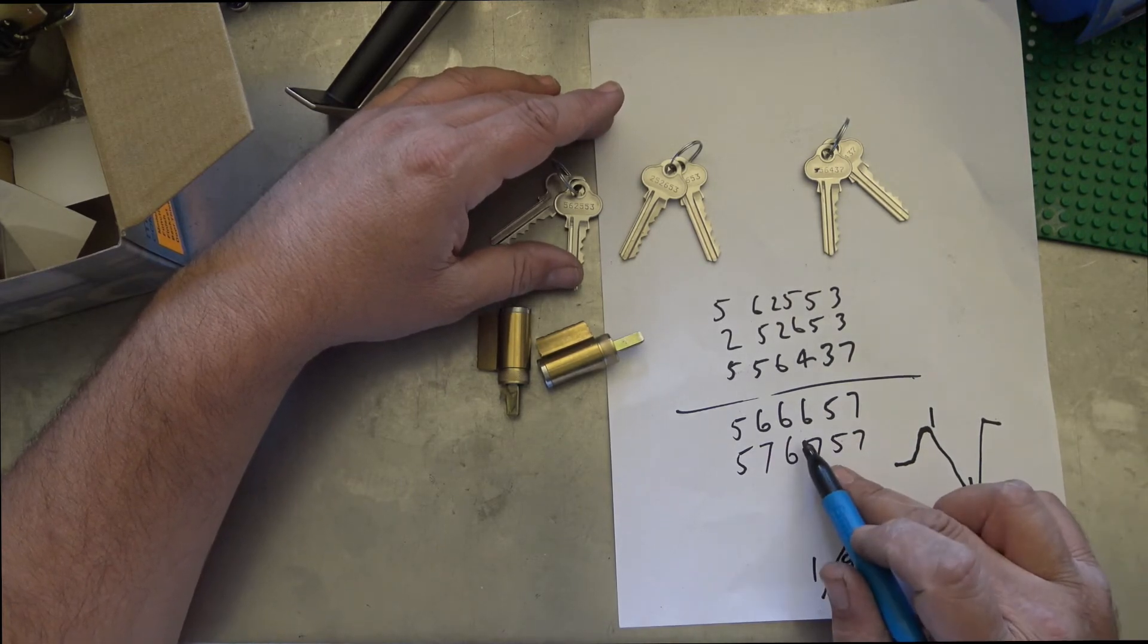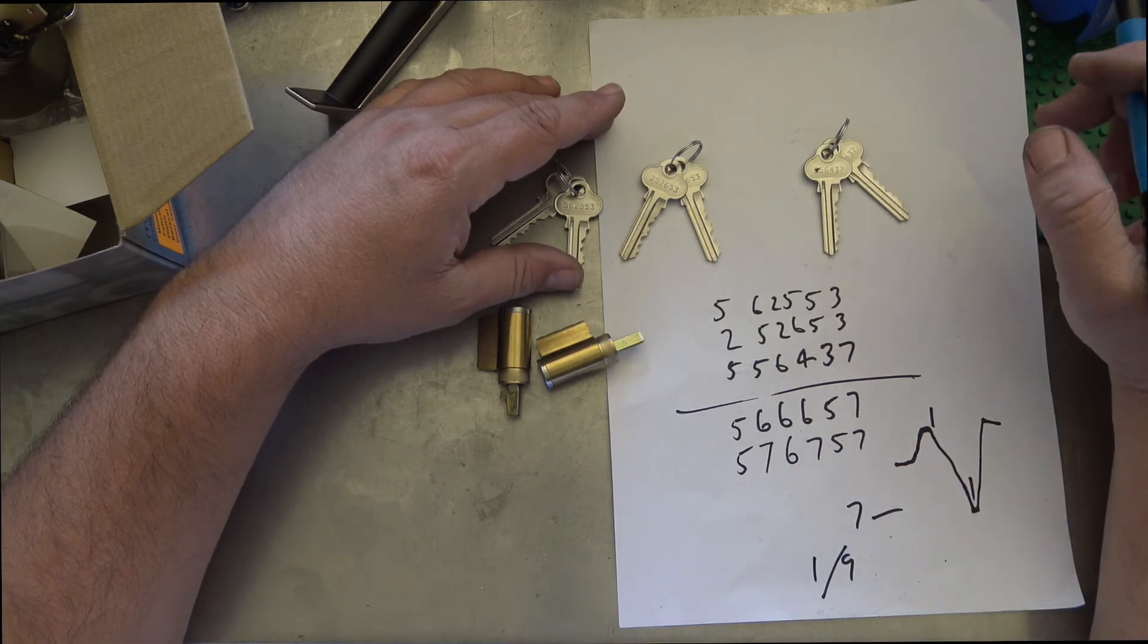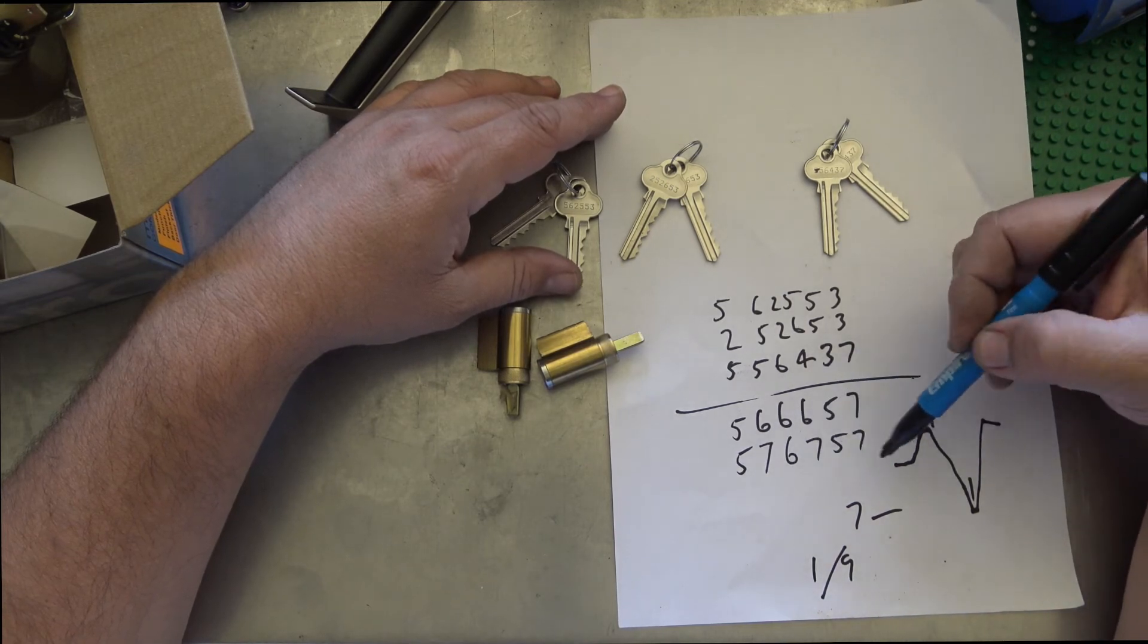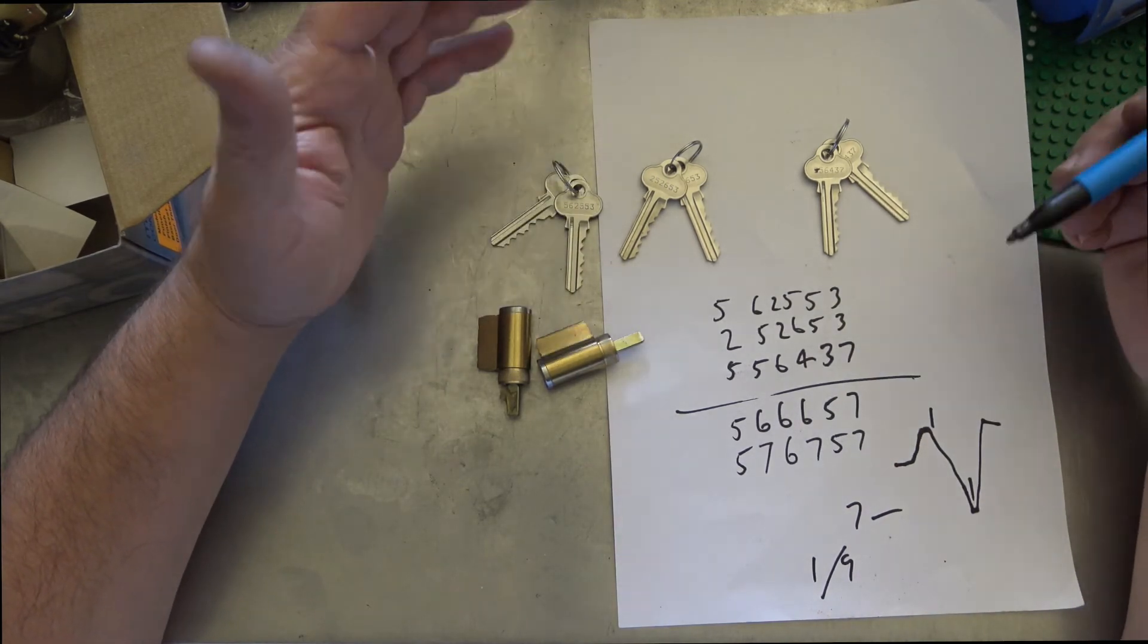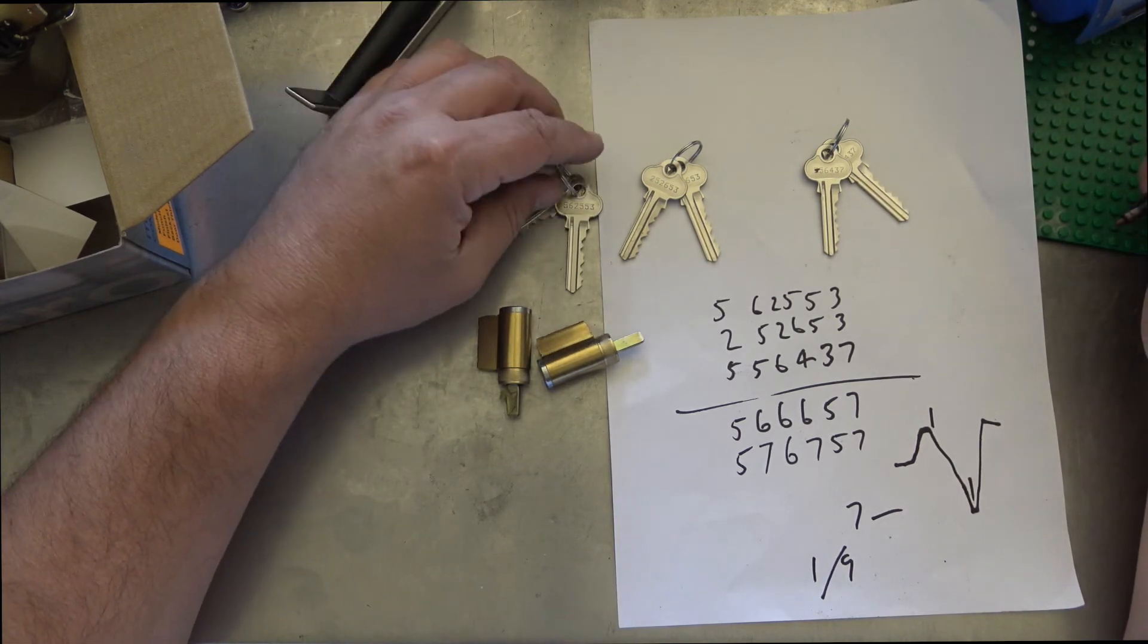Having triple 6 right there would also make it quite easy for a lock pick to go in there and find three pins in a line. So that's why juggling them up, even though one cut higher and lower, it's still better to have it odd even odd even, high low high low. That gives a bit more security.